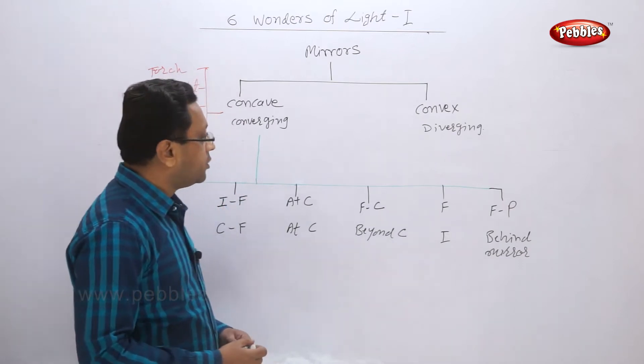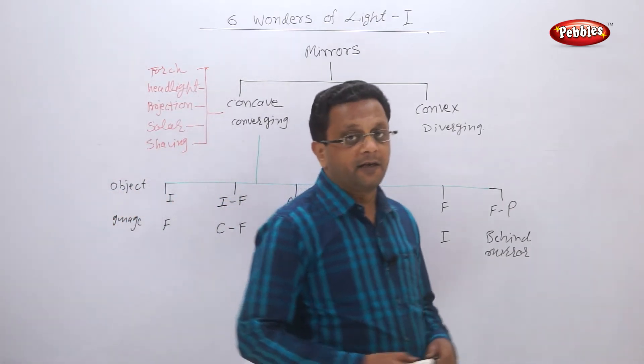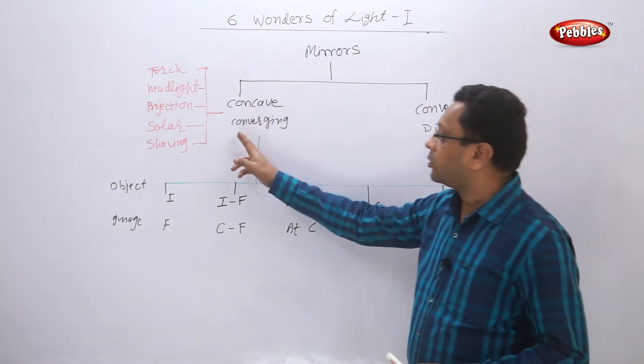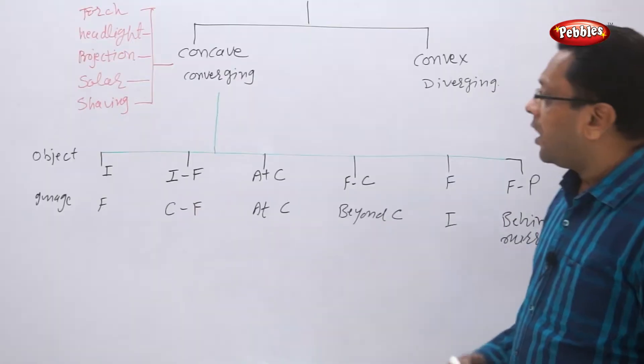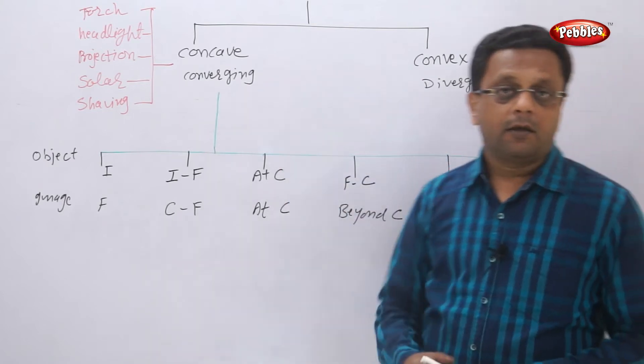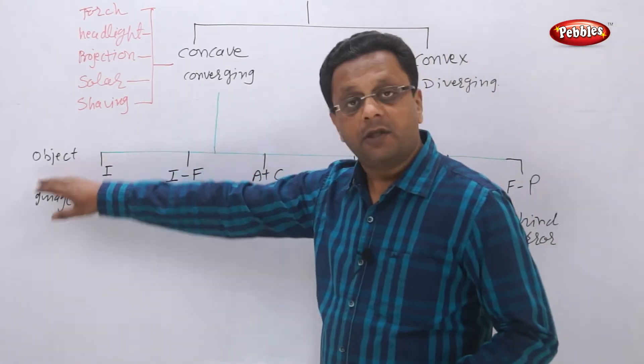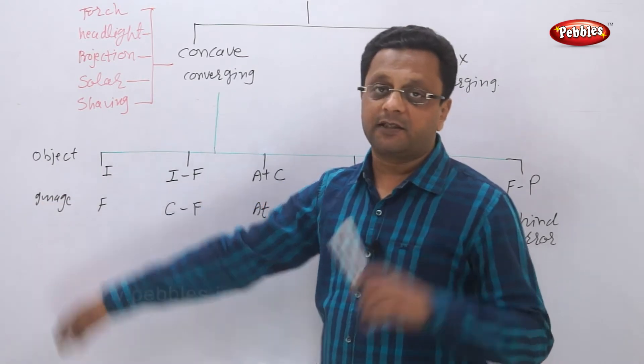Now we have studied in detail the six ray diagrams or line diagrams for the concave mirrors. After that, we learned many ray diagrams where the object position and image position - let us summarize it quickly.